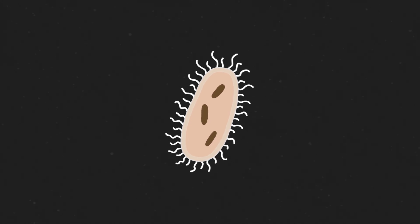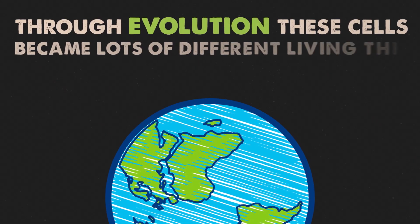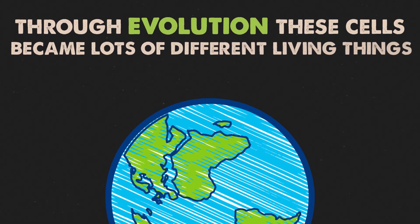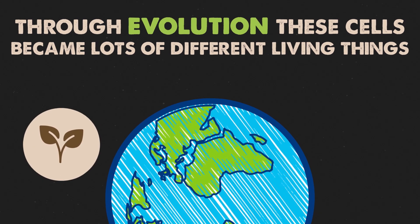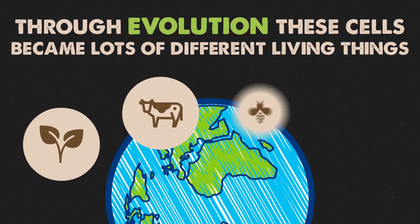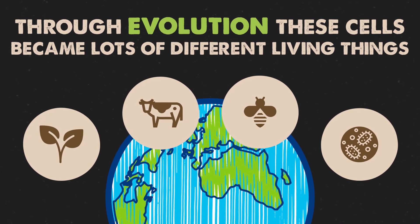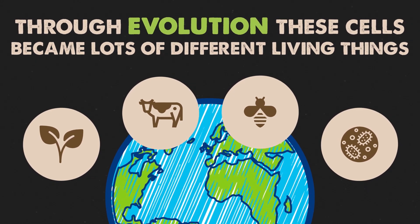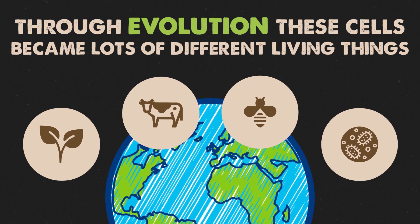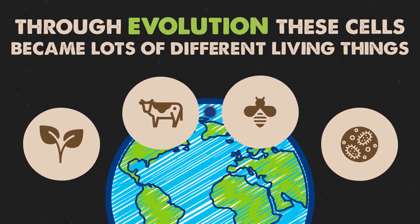Billions of years ago, these single cells began to become more complex. Through a thing called evolution, these cells became lots of different living things, like plants, mammals, invertebrates, and microorganisms, which are the ones you can only see under a microscope. What's so amazing about the natural world is that everything came from a common ancestor, including us.